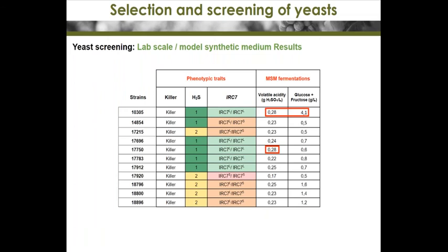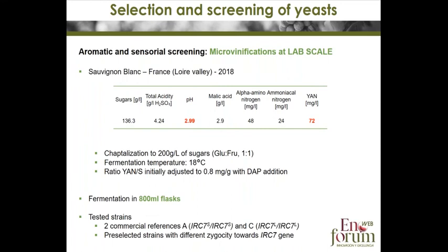Despite this defect, these strains are great for thiol production, so we kept them and preselected 11 strains for the next stage of selection. The next study to select yeast was carried out using Sauvignon blanc, a grape variety with low pH and nitrogen deficiency.